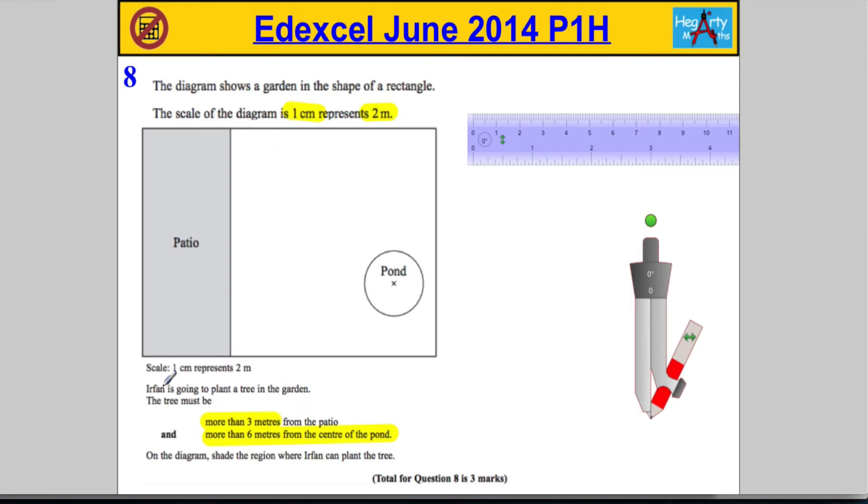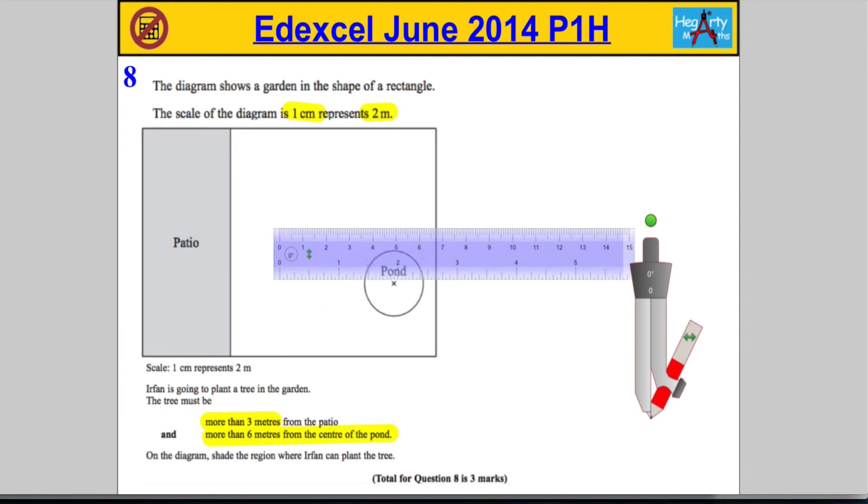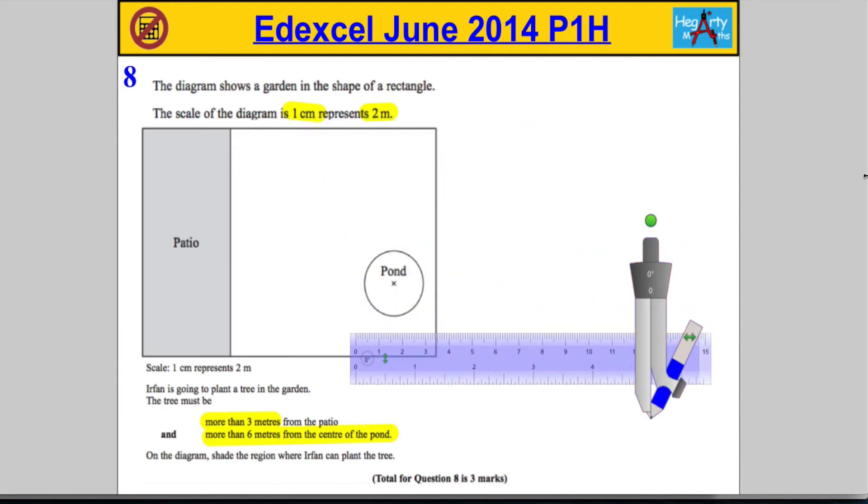We're told that the tree must be more than 3 meters from the patio. Here's our patio here. I need to be more than 3 meters from the patio. So what I'm going to do is measure it out. Now, it tells me that 1 centimeter is 2 meters. Let's see how many centimeters my diagram is going to have to be. 1 centimeter is equal to 2 meters.